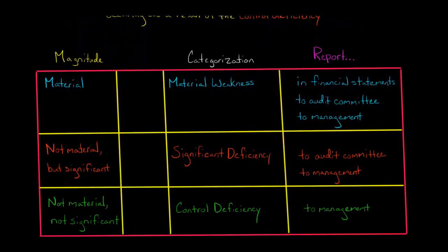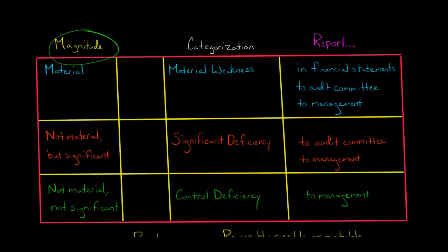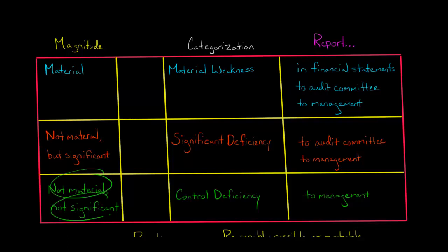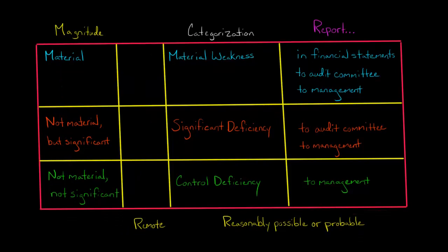On the magnitude axis, we have: material (if the control were to fail, would it have a material effect on the financial statements?), not material but still significant (which requires some professional judgment), and not material and not significant. For example, if we're talking about a control for Walmart and if this control were to fail, Walmart's revenue would be misstated by $5 — clearly that's not material and not significant.